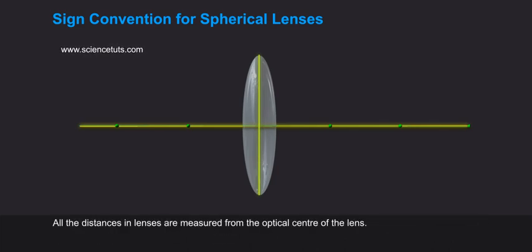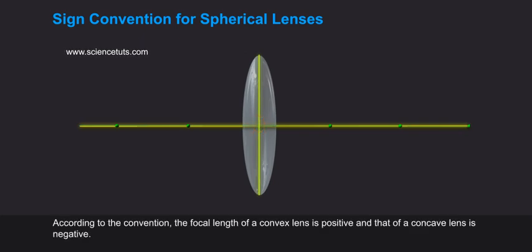All the distances in lenses are measured from the optical centre of the lenses. According to the convention, the focal length of a convex lens is positive and that of a concave lens is negative.